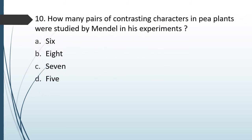Question No. 67: How many pairs of contrasting characters in a pea plant were studied by Mendel in his experiment? Options: 6, 8, 7, or 5. The correct answer is Option C — 7 pairs.